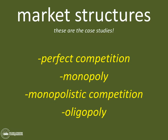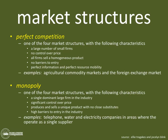Perfect competition is one of the four market structures with the following characteristics: a large number of small firms in the market, firms have no control over price, all firms sell a homogenous product, there are no barriers to entry, and there is perfect information and perfect resource mobility. Examples include agricultural and commodity markets and the foreign exchange market.